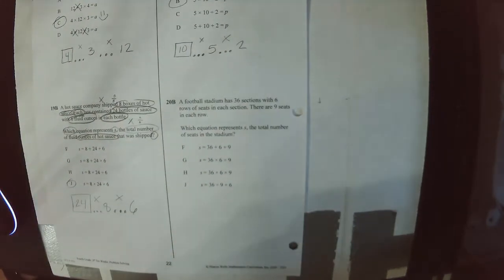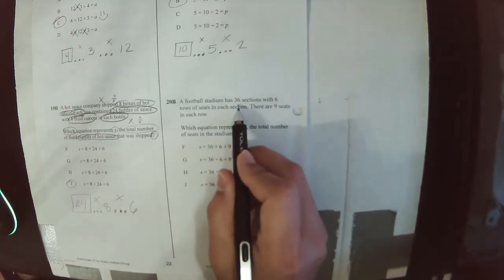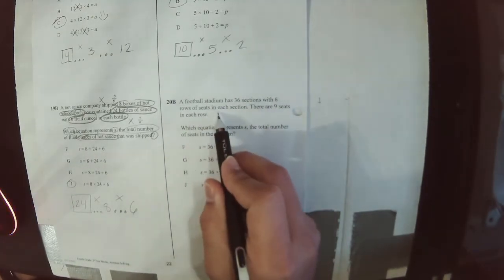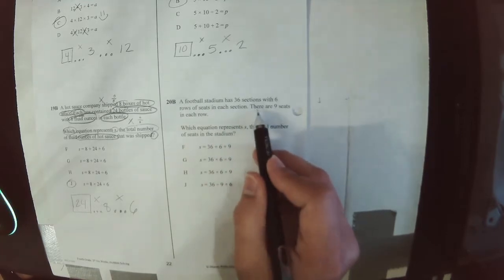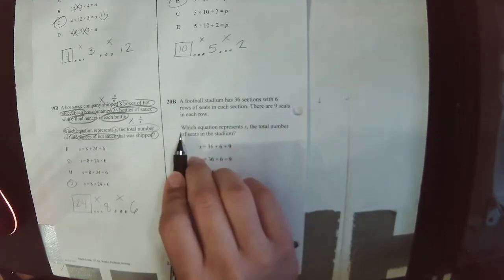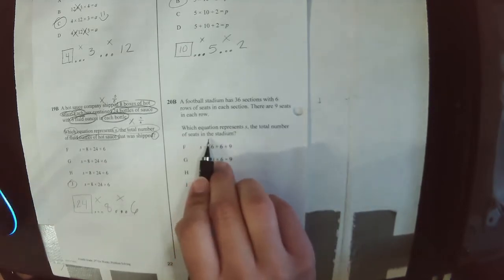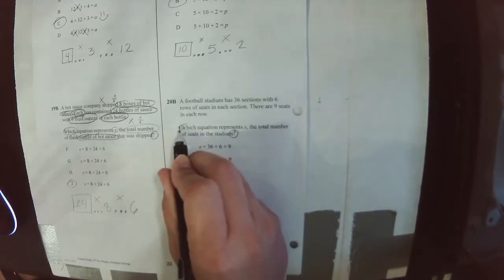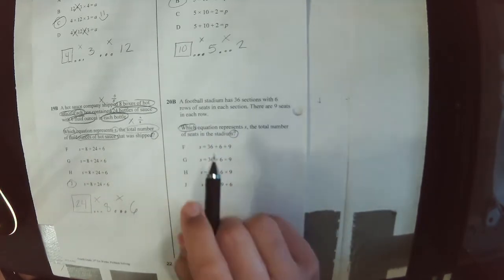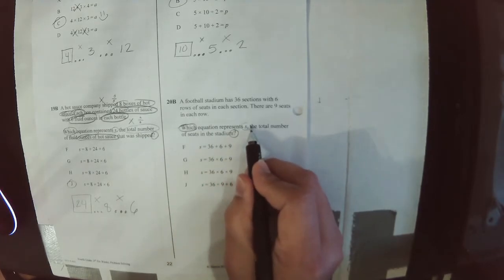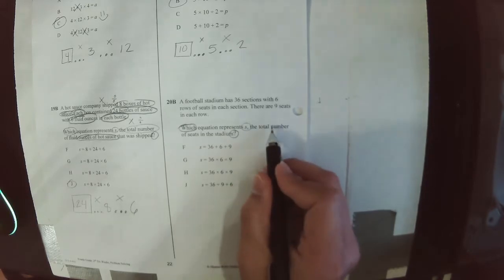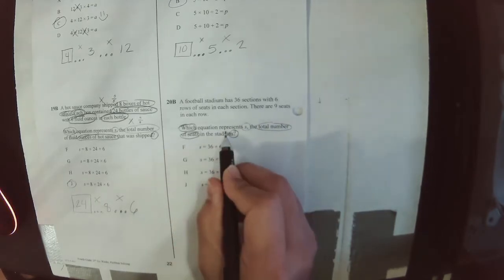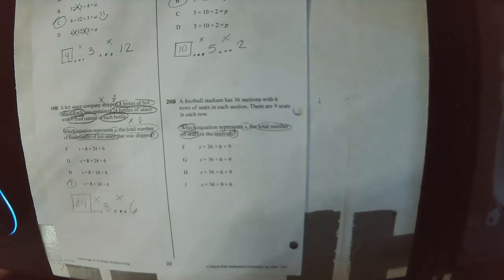Problem 20B. A football stadium has 36 sections with 6 rows of seats in each section. There are 9 seats in each row. Which equation represents S, the total number of seats in the stadium? My question word: which equation represents S? What does S stand for? It stands for the total number of seats in the stadium — so if you counted every single seat in the whole stadium, how many would you get?